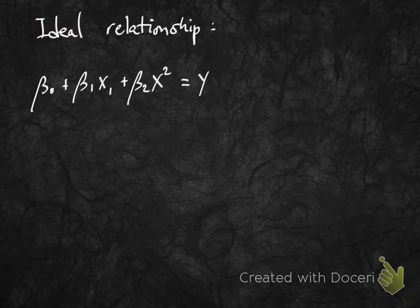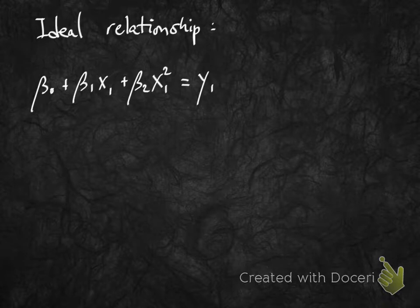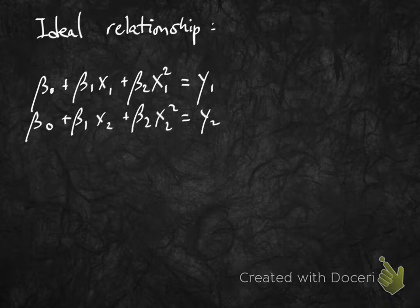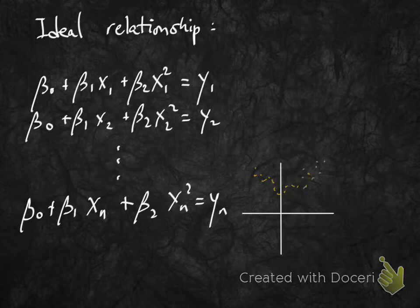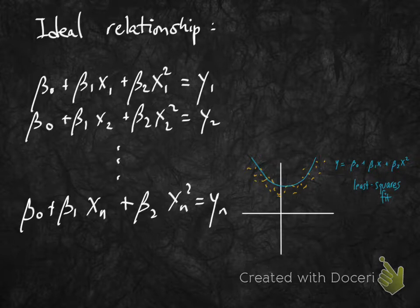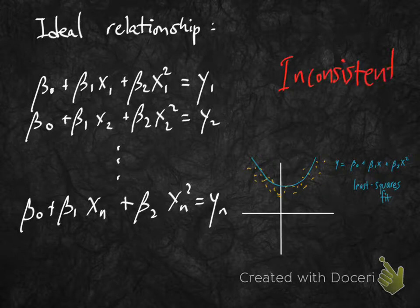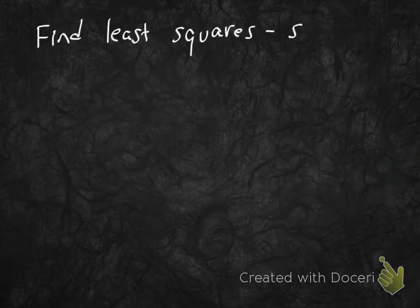What would the ideal relationship be? If I had a quadratic polynomial whose graph went through the point (x₁, y₁), I would need β₀ + β₁x₁ + β₂x₁² = y₁. Similarly, if it went through (x₂, y₂), I'd have β₀ + β₁x₂ + β₂x₂² = y₂, and so on for all the rest of the points. Looking at the picture, the curve we found doesn't actually go through all of the points, which means this linear system is inconsistent. We don't want to just throw our hands up — we want to find the best possible quadratic, which involves finding a least squares solution.